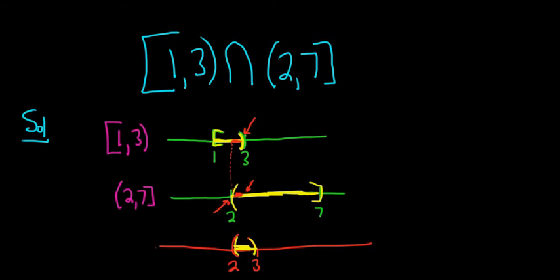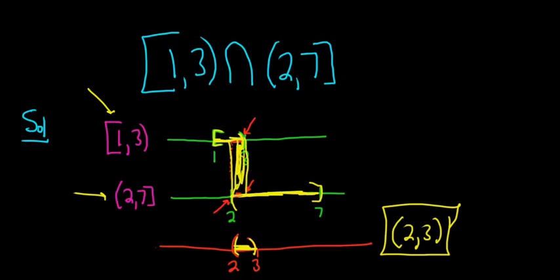So you would write that in interval notation straight from the picture. It would be (2,3). So again, recap. First thing you do is you graph each set. And then it's the intersection, so it's what they have in common. So you can see it's this piece here that they have in common. And so you have parentheses on both. And that's it. I hope this has been helpful.